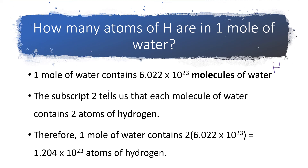The formula for water is H2O, and there are two hydrogens in every one molecule. One mole contains 6.02 times 10 to the 23rd molecules. So if we have one mole of water, we have twice that number of hydrogen atoms, because each molecule of water has two hydrogens. So each mole of water has twice as many hydrogens — 2 times 6.02 times 10 to the 23rd, which is 1.2 times 10 to the 24th atoms of hydrogen.